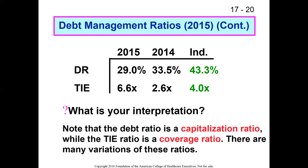For these two debt management measures: the debt ratio is a little low and going lower — from 33% in 2014 to 29% in 2015 versus the industry average of 43%. It appears they've paid off a bunch of long-term debt. A strategic question is whether they're intentionally deleveraging to become more equity financed. Times interest earned jumped dramatically from 2.6 to 6.6 — going from a dangerous level to a healthy, perhaps even too high level over the course of one year.